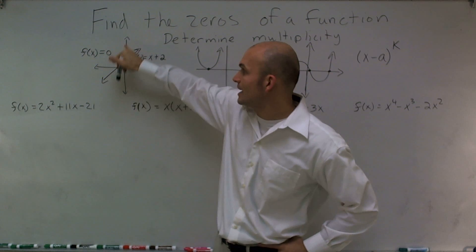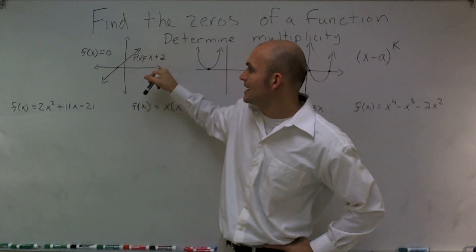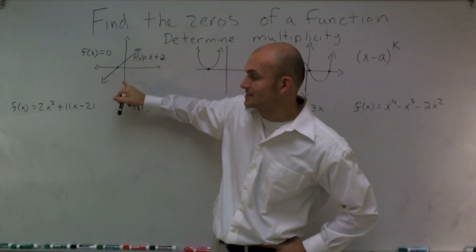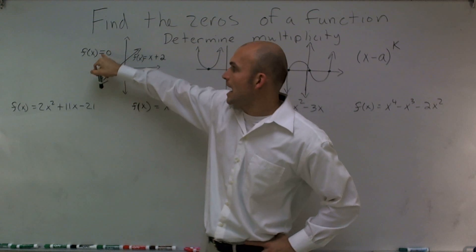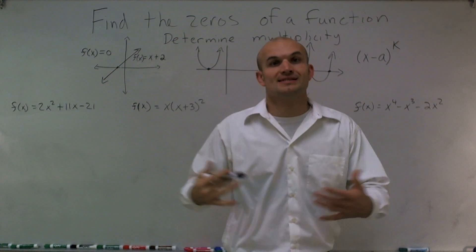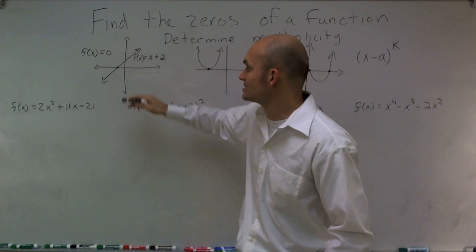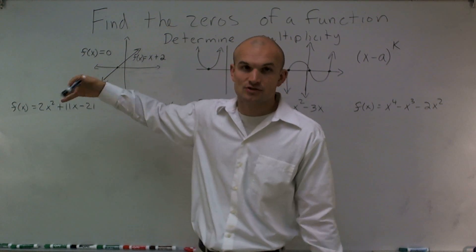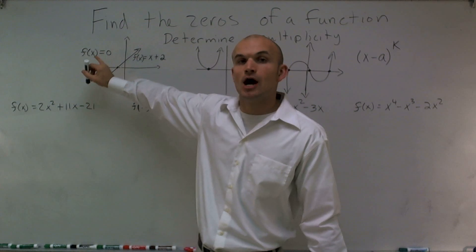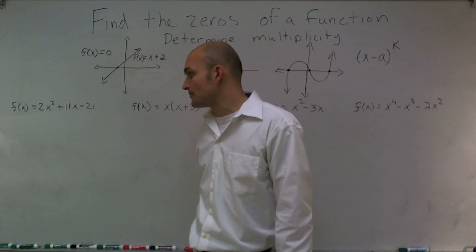The output value — here's my x-axis, here would be my f of x-axis — the output equals 0 at this point. Therefore, we call that the zeros. Where the graph crosses the x-axis is what we call the zeros, because your output, your f of x, is equal to 0.